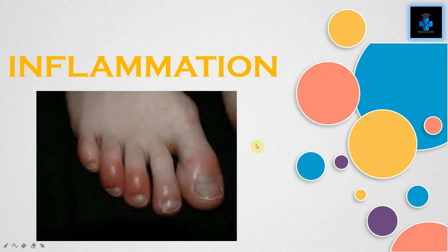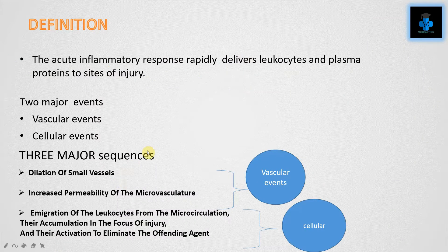Welcome to Medifaction. Today let's learn about inflammation — acute inflammation to be precise. Due to entry of a microbe or any tissue injury, inflammation may occur. The acute inflammatory response rapidly delivers leukocytes and plasma proteins to sites of injury. Two major events taking place are the vascular events and cellular events, and three major sequences come under this.